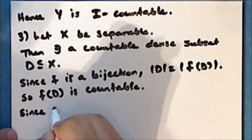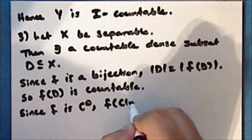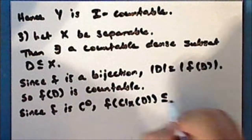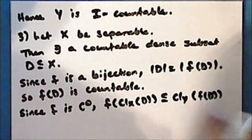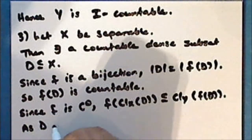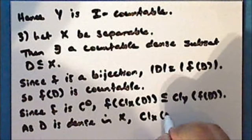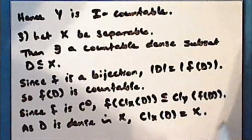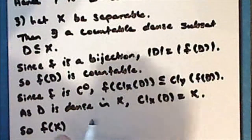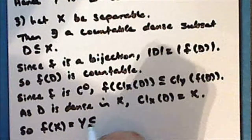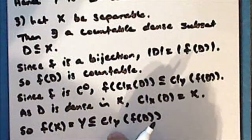Since the function F is continuous, the direct image of the closure of D in the space X is a subset of the closure of the direct image of D in the space Y. As the set D is dense in the space X, the closure of D in X is the entire space X. And so the direct image of the entire space X, which is the space Y, is a subset of the closure of the direct image of D in the space Y.